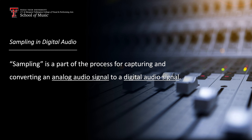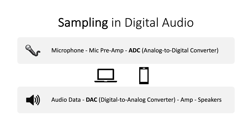Sampling is a part of the process for capturing and converting an analog audio signal to a digital audio signal. The sound goes from a microphone, mic preamp, and then to ADC — analog to digital converter — before you can record it on a computer or smartphone. So ADC is the key component for sampling. Every smartphone contains an ADC as well as DAC, digital to analog converter, in order to capture and play any sound including your voice for a phone call.